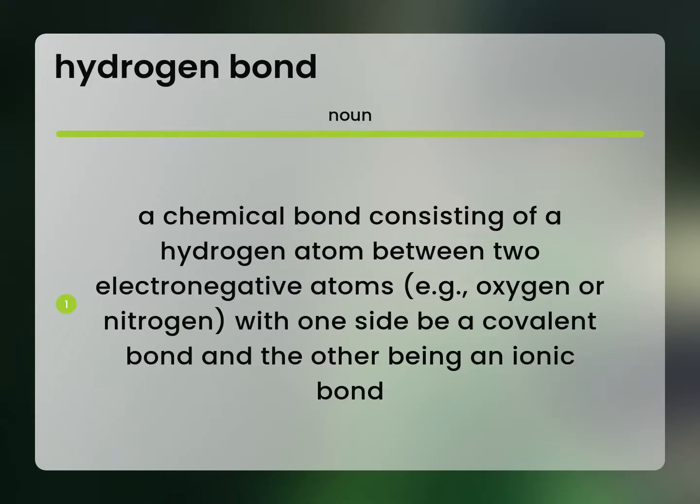A chemical bond consisting of a hydrogen atom between two electronegative atoms, e.g. oxygen or nitrogen, with one side being a covalent bond and the other being an ionic bond.